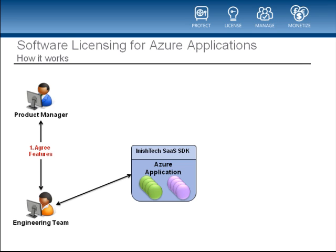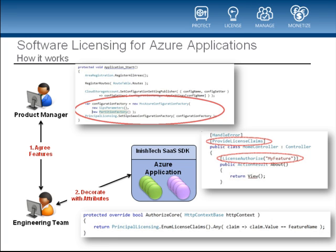There are two teams of people that are important when enabling licensing for your Azure application: your engineering team and your product management team. The first step is that they agree between themselves which application features are flagged as distinct for the purposes of licensing and SKU definition — in other words, which features will define the products. Once agreed, the engineers will then decorate the application with simple code attributes that featurize it using the InishTech Azure SaaS SDK, preparing the application to be license-ready. As you can see from the code snippets provided, this is neither a lengthy nor complex task — on the contrary, it is really simple.